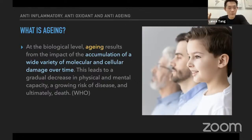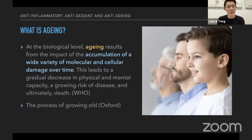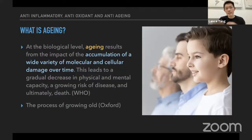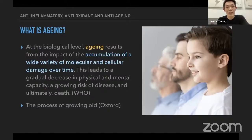I would rather take the WHO definition for us to dive further into aging, because it's important to note that it mentions cellular and molecular damage over time. When we discussed inflammatory and oxidation, both of them are actually causing damage to our cells and molecules in the body. So if we know how to tackle inflammation and oxidation, does it mean we can actually slow down and control our aging and keep our body always at the optimal state?